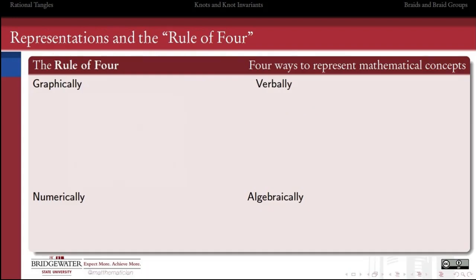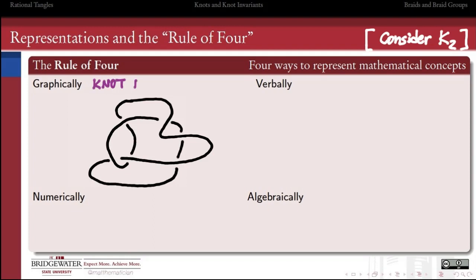In class, the descriptions people came up with kind of fell into a variety of categories that math educators might recognize as the rule of four. There are four different modes in which we can represent a mathematical concept. Let's take the knot K2. The most obvious way that everybody chose to depict their knot was graphically, to draw a knot diagram.